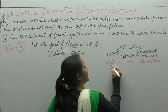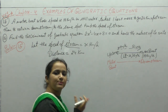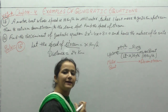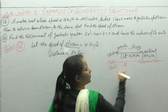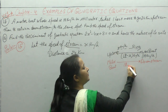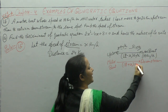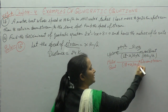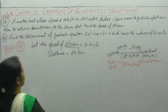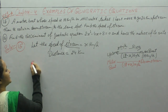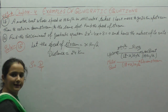If you want to go downstream, the water flow helps you, so the speed is automatically increased — it becomes 18 plus x km per hour. Now we have the formula: speed equals distance divided by time.